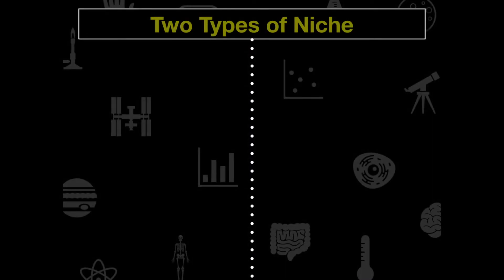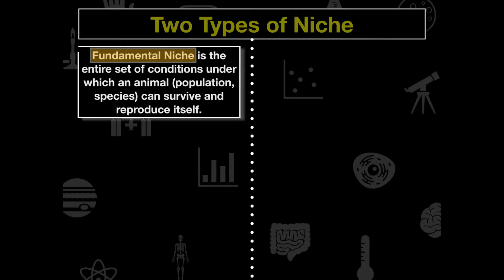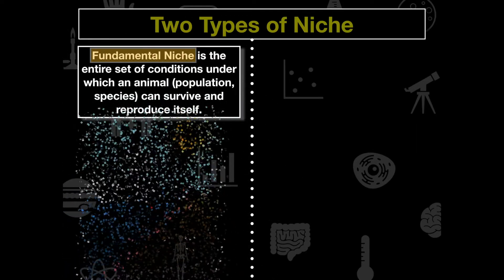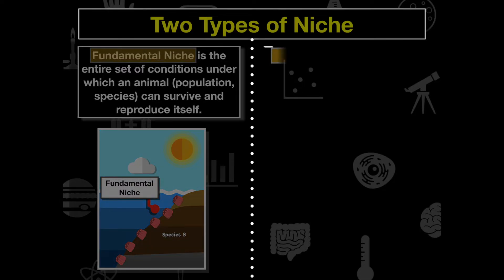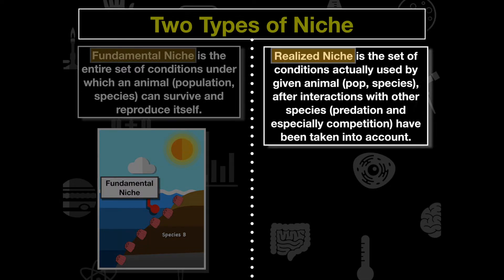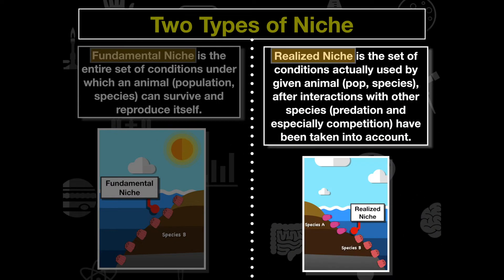There are two types of niches. There's the fundamental niche, which is the entire set of conditions under which a species can survive and reproduce itself. And there's also the realized niche, which is the set of conditions actually used by a species after interactions with other species — so after predation and competition have been taken into account.